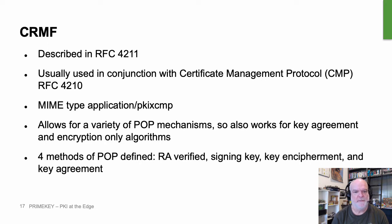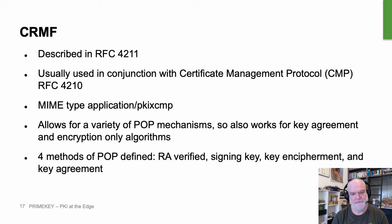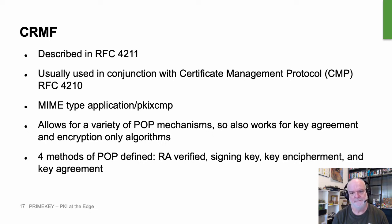The nice thing about CRMF, apart from its overall flexibility compared to PKCS10, is that it allows for a variety of proof of possession mechanisms. You can create quite sensible CRMF messages for requesting a certificate that's going to contain a Diffie-Hellman key, or a key that can only be used for encryption. There are four methods of proof of possession defined: RA Verified (essentially 'it's been verified, please accept it'), signing key, key encipherment, and key agreement. These all provide mechanisms allowing you to determine that only the person who holds the private key for the public key will actually make use of the certificate when it comes out.